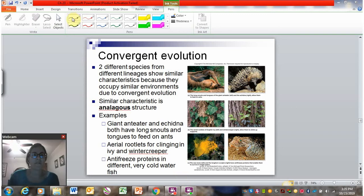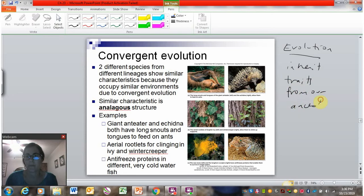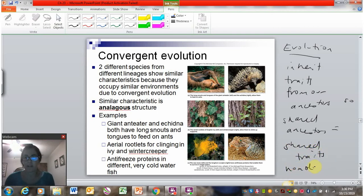The typical way that we think of evolution happening is when we inherit traits from our ancestors. So shared ancestors result in shared traits. And this is called homology, which is discussed in a different video.